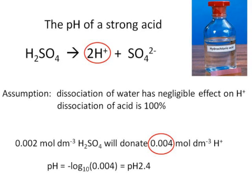If we look at another acid, I've put this one in because it's a diprotic acid. One mole of H2SO4 will give you 2 moles of H+. So in my example at the bottom we've got 0.002 moles per decimeter cubed of sulfuric acid, and that will donate 0.004 moles per decimeter cubed of H+. So that will give us negative log 10 of 0.004, pH 2.4. That's fairly straightforward.